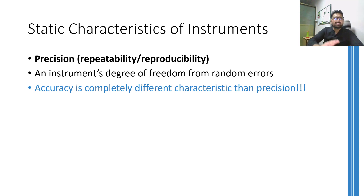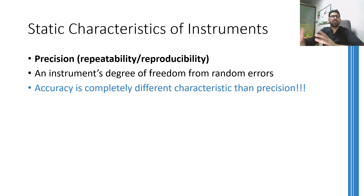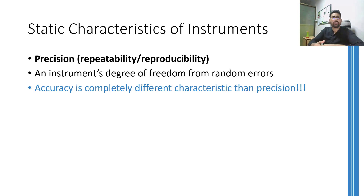However, if you can produce exactly the same handwriting every time, you will be called precise. For a more engineering-related example: suppose you have developed a simple weighing machine to measure your weight. The first time you stand on it, it gives you a reading of 85 kg. You step down and stand on it again — this time 84 kg. Repeating this five times, the values you get are 85, 84, 85, 86, and 84.